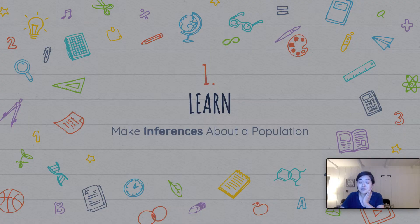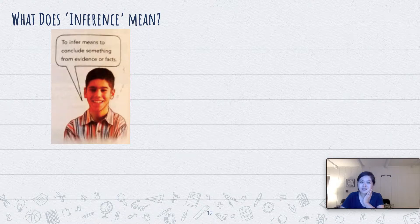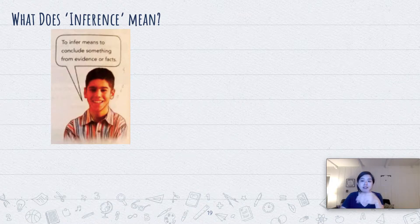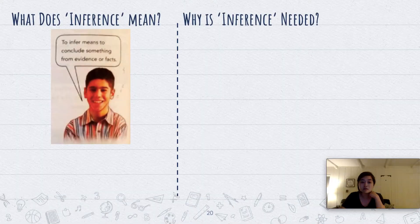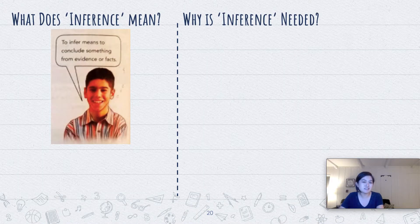Now what we're going to do is make inferences about a population. But what does inference mean? Well, to infer means to conclude something from evidence or facts. It may not tell you straight out; you need to kind of look at clues, the hints, the evidence to make your own conclusions. So why is inference needed in statistics?